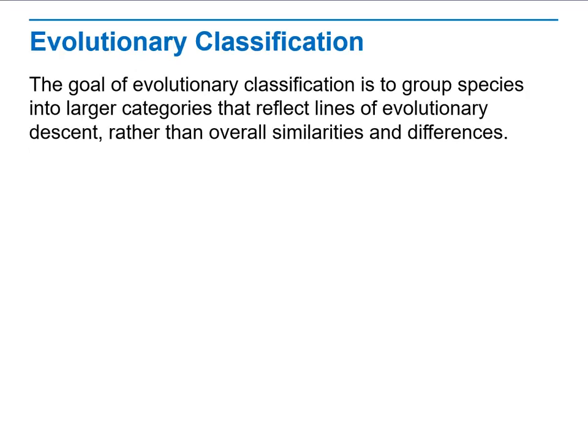When we talk about evolutionary classification, the goal is to group species into larger categories that reflect lines of evolutionary descent, rather than overall similarities and differences — to clarify how they are related, rather than only how they are similar.